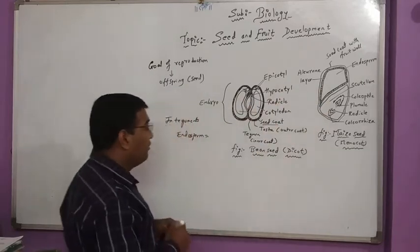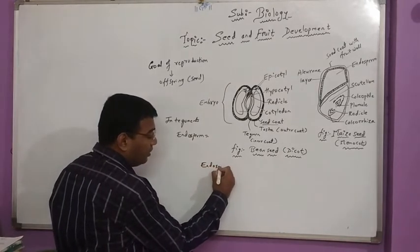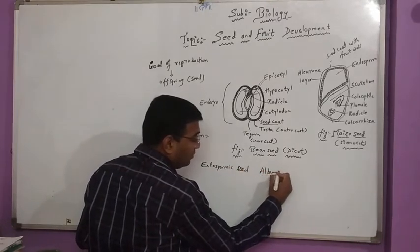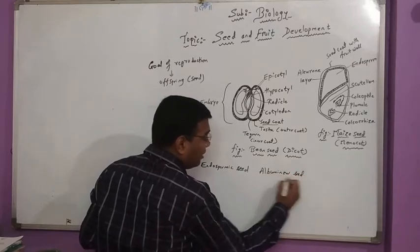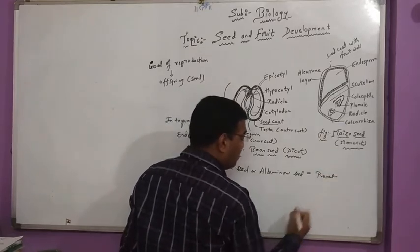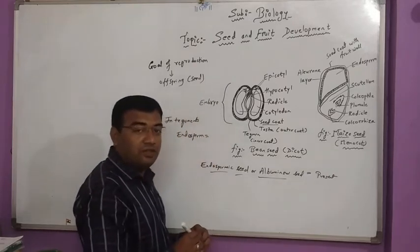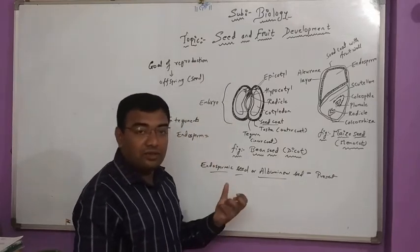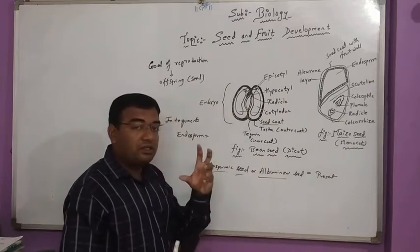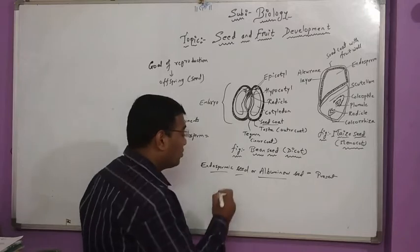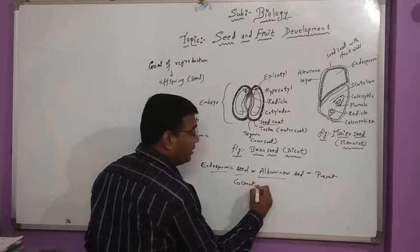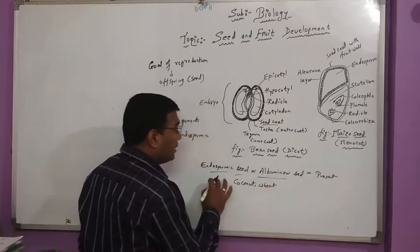There are also some seeds which are having the presence of endosperm. We call such seeds as endospermic seed or we also call them as albuminous where the endosperm is present. In this kind of seed, the endosperm is present as a nutritive tissue. That's why there is a vacuum-like situation seen in the presence of coconut. Coconut is one of the good examples of endospermic seed. Next example is we can say wheat. These are all endospermic seeds.